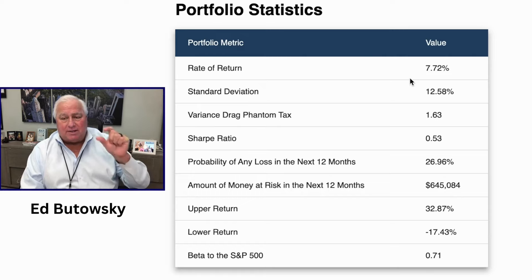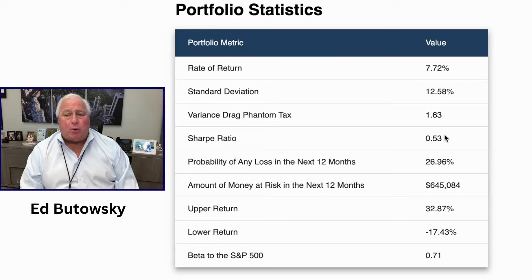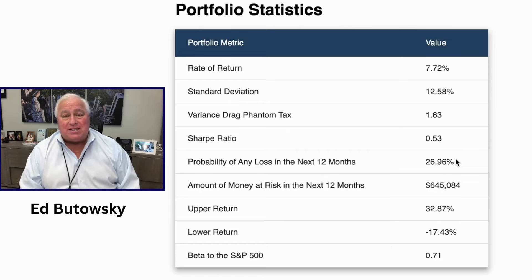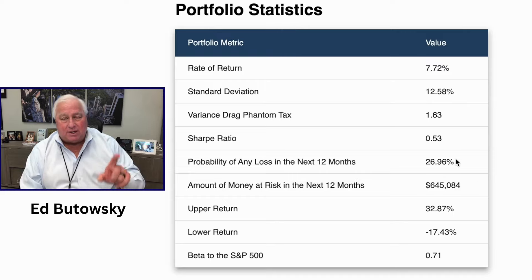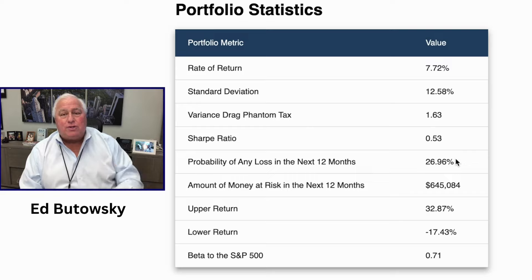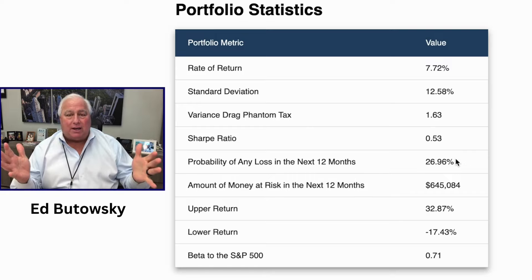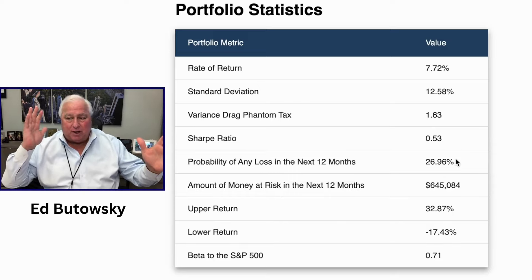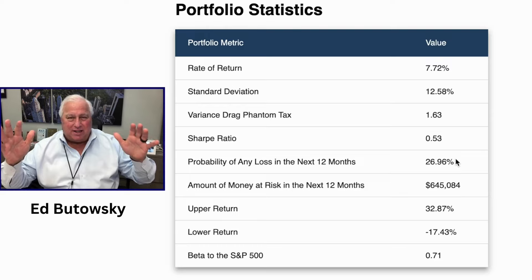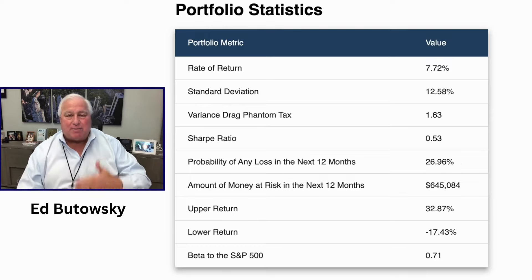All you have to look at is the variance drag phantom tax. If it's above one and a half, you're taking way too much risk — it should be 0.8 or lower. The Sharpe ratio should be one or higher; this is 0.53. The probability of any loss in the next 12 months on this portfolio is 27%, and the amount of money at risk is $645,000. You have just as good a chance of making 32.8% in the next 12 months as you do losing 17%. What kind of planning can you do with such a divergence between 33% and 17%? There's absolutely no way you can plan for future expenses and savings. This is just not a very good portfolio.